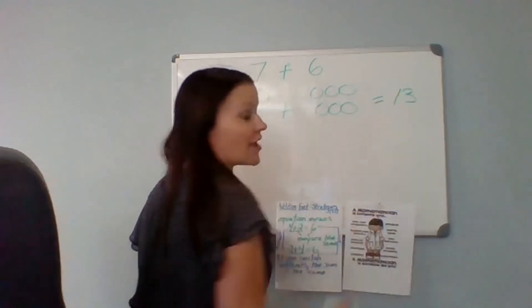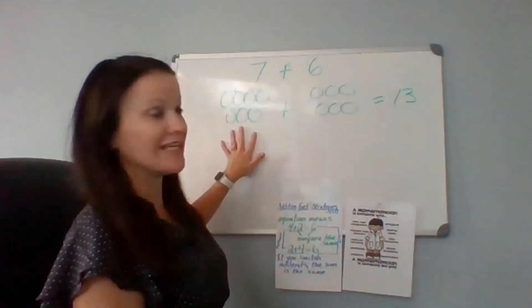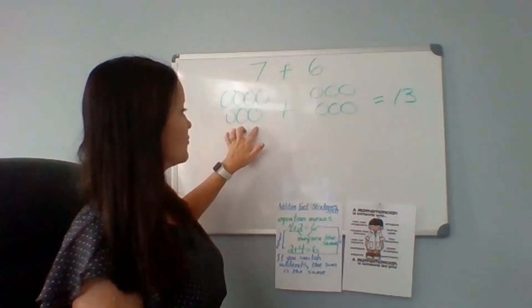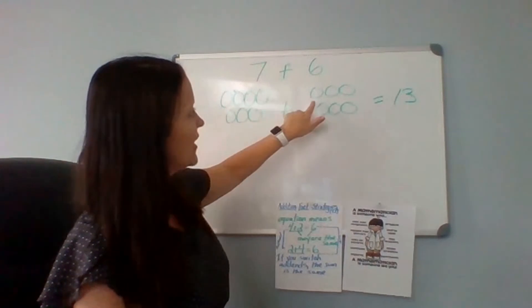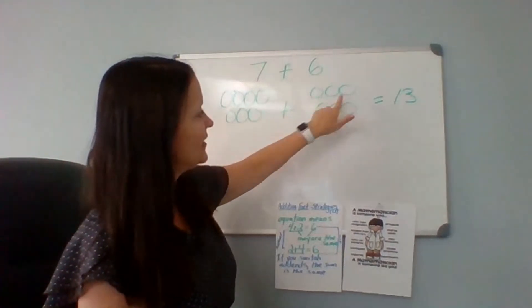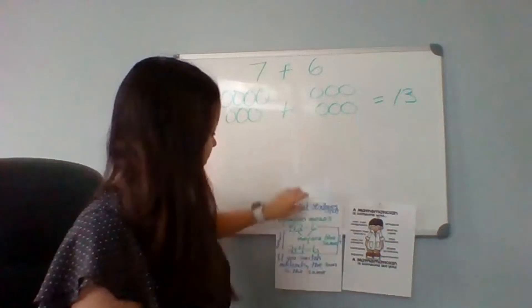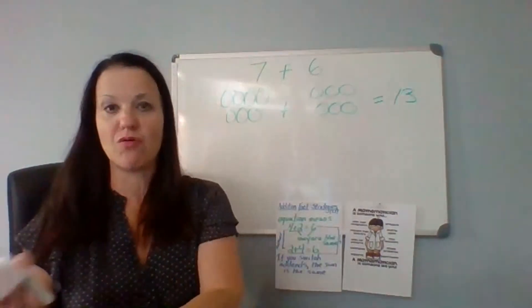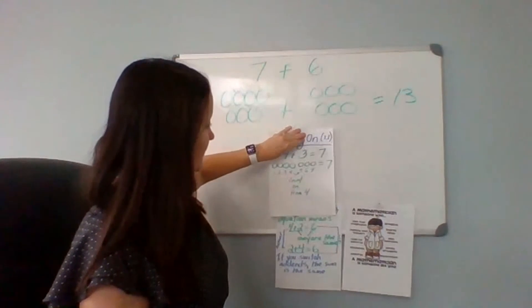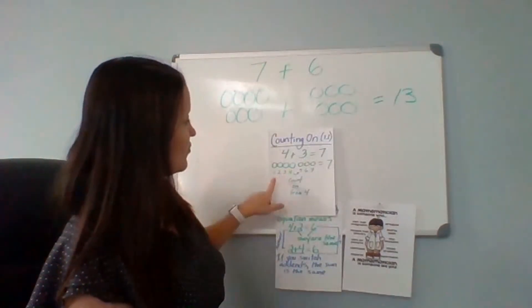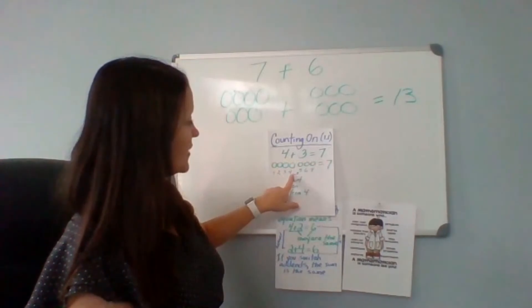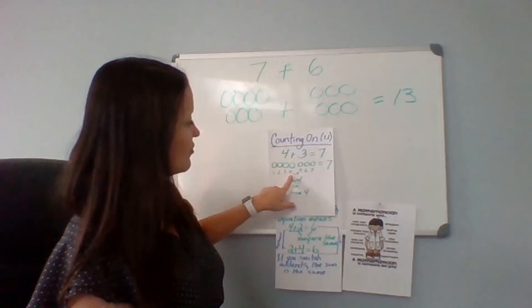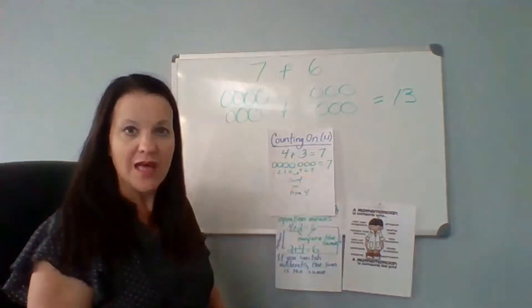So 13! I actually just counted on. I had seven here and then I counted on from seven — I started with my first addend and went seven, eight, nine, ten, eleven, twelve, thirteen. That's what you do when you count on: you start with the first addend and then continue with the second addend. For example, four plus three equals seven — I had four, then I count on three more: four, five, six, seven.